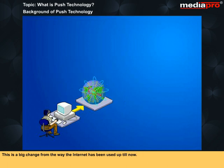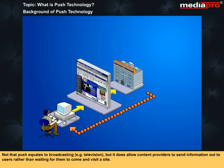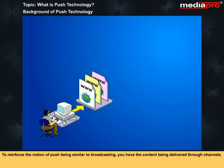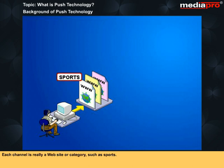This is a big change from the way the internet has been used up till now. Push does not equate to broadcasting — for example, television — but it does allow content providers to send information out to users rather than waiting for them to visit a site. To reinforce the notion of push being similar to broadcasting, content is delivered through channels. Each channel is really a website or category, such as sports.